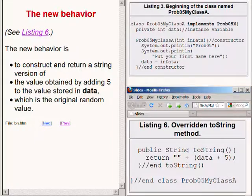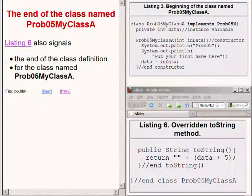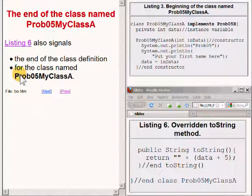The code fragment on the bottom right of your screen also signals the end of the class definition for the class named prob05myclassa.